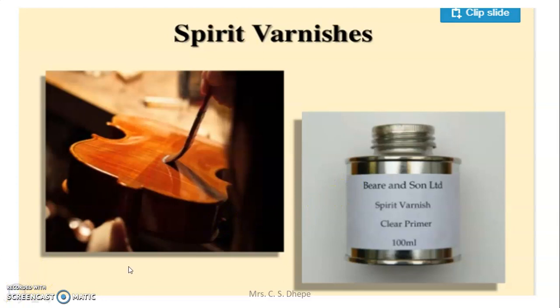To summarize: varnish is a homogeneous mixture of resinous material in oil or volatile substance. There are two types — oil varnish and spirit varnish. Oil varnish uses copal and linseed oil; it forms a durable, hard film and is resistant to weather. Spirit varnish uses shellac and methylated spirit; it is mostly applied on furniture but is not resistant to weather. That completes the topic of varnish.